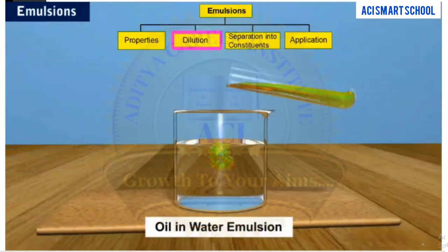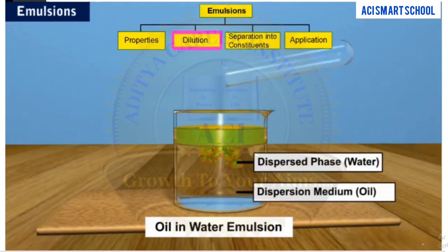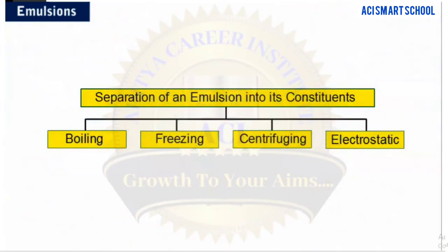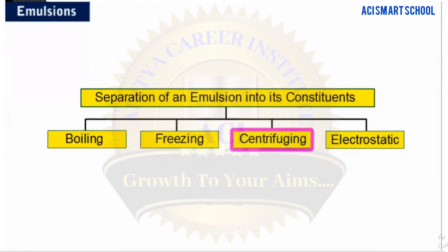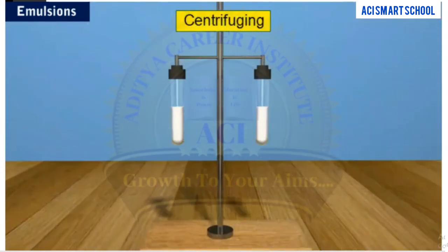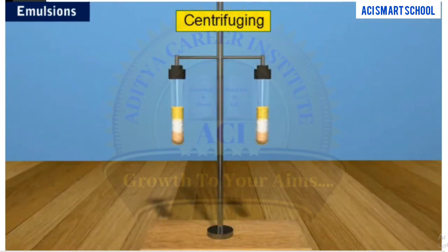On the other hand, if the dispersed phase is added to an emulsion, it forms a separate layer. An emulsion can be separated into its constituent liquids by boiling, freezing, centrifuging, electrostatic precipitation, etc. A well-known example of centrifuging is the separation of cream from milk.